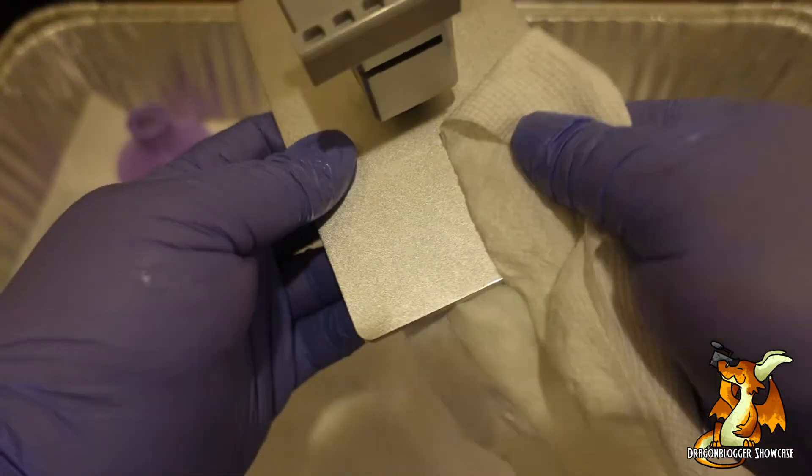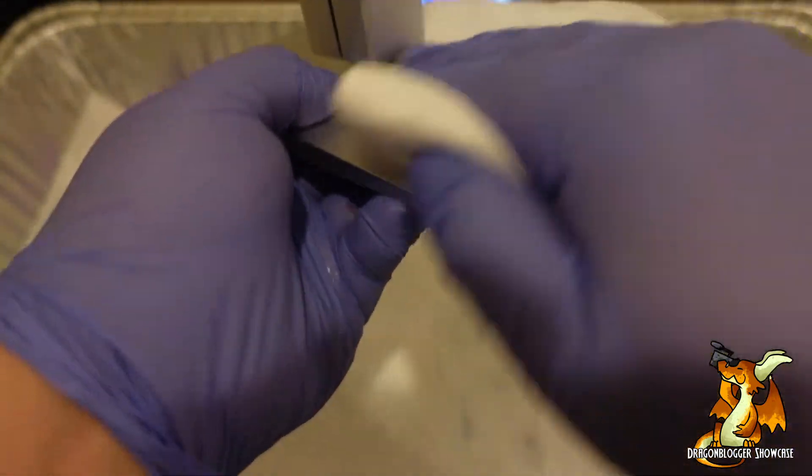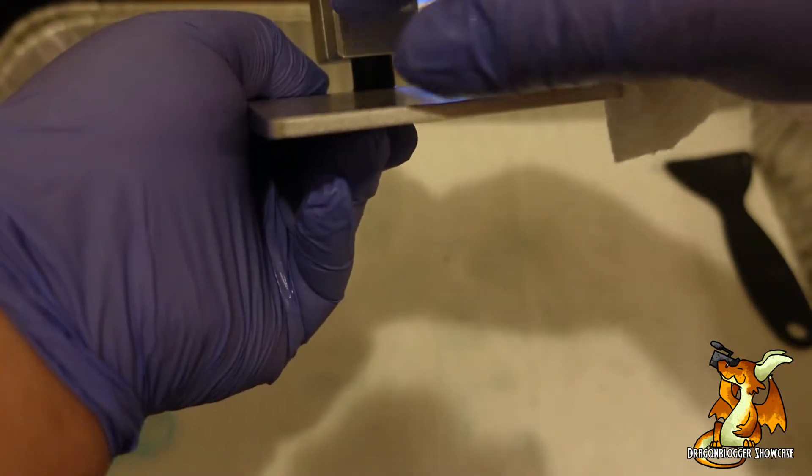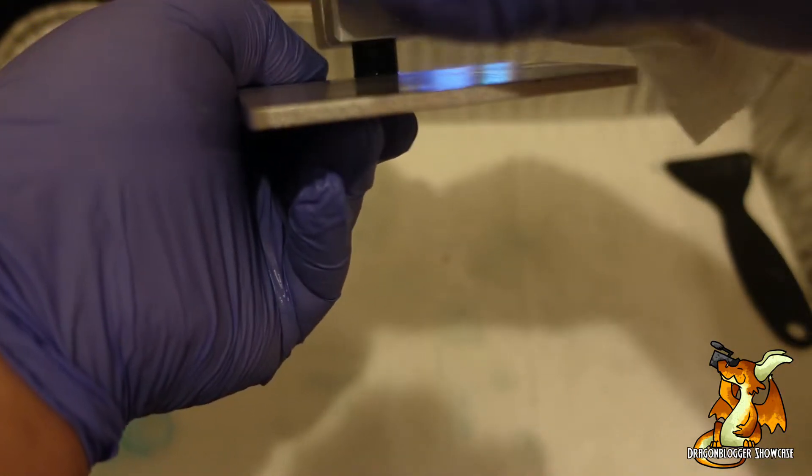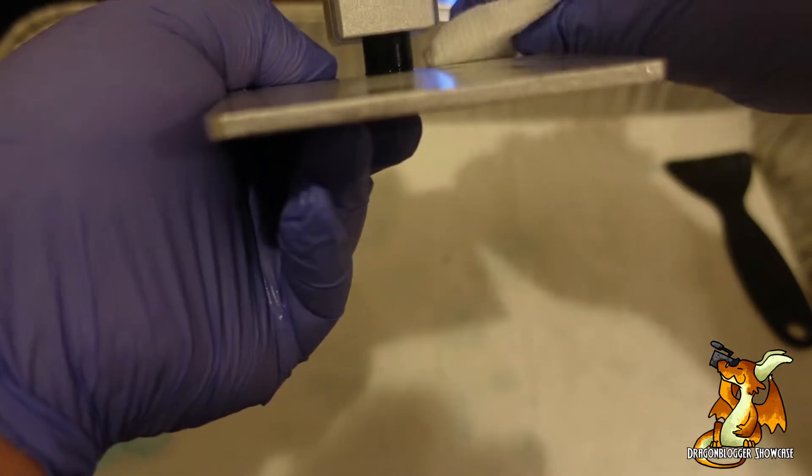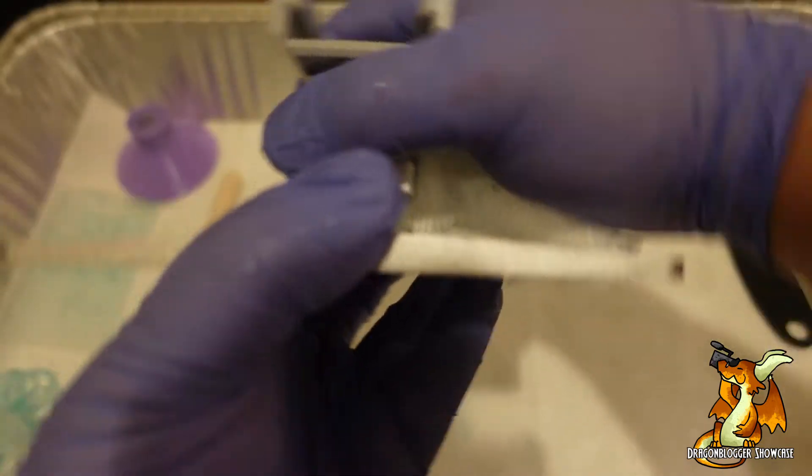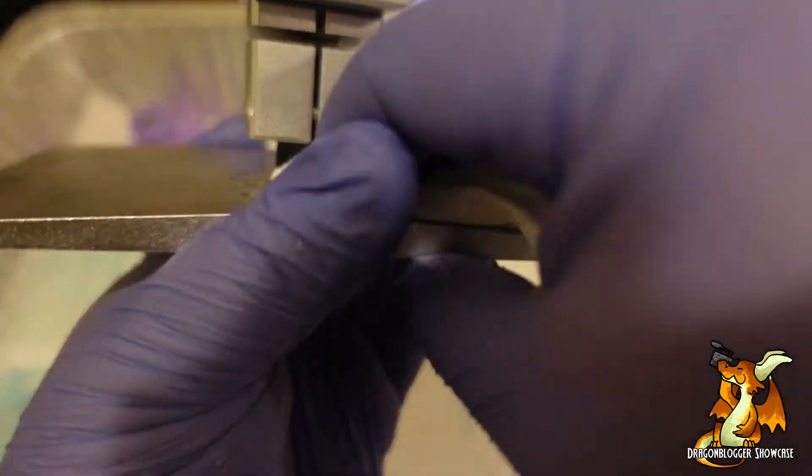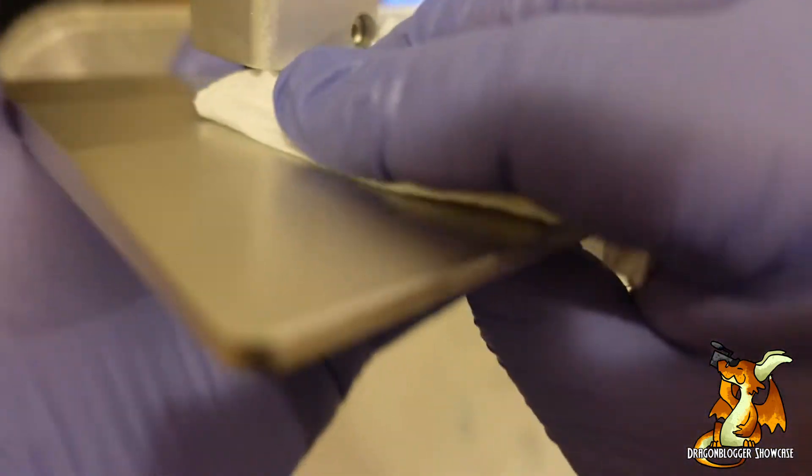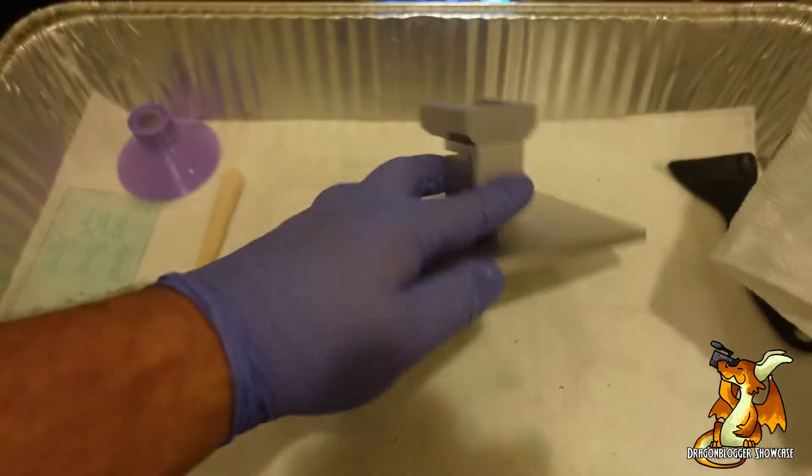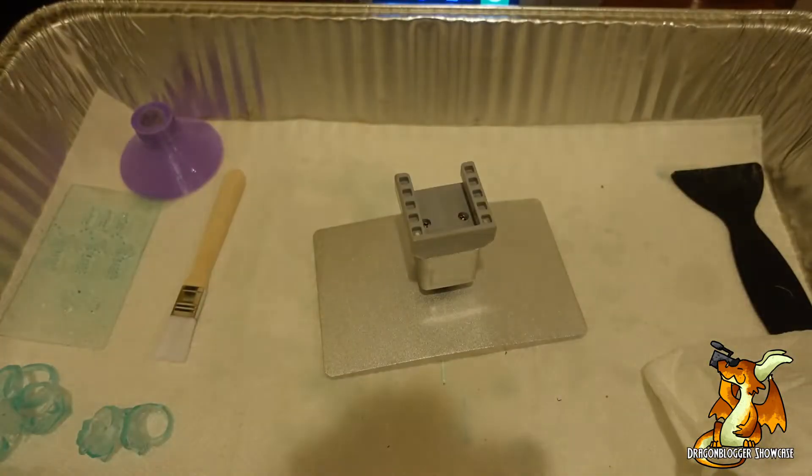When you're dealing with a removable build plate like this, try not to put any pressure between here and here, because this is where your leveling happens. If I were to crank on this this way, I would mess up my leveling and I have to get that restarted. With that being said though, the Mingda printer makes that easy.